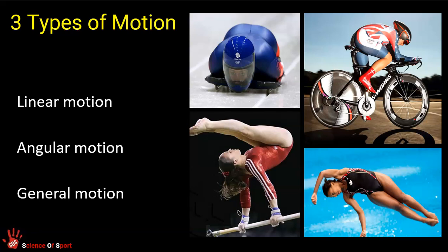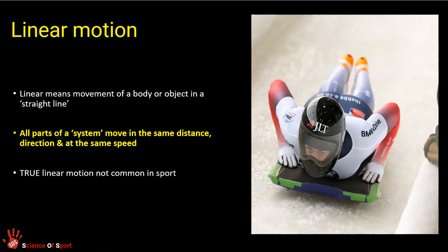Three types of motion: linear motion, angular motion, and general motion. Linear motion is, in simplest terms, straight line motion. It's when all parts of a system or body or object move in the same direction, at the same time, and over the same distance. True linear motion fulfilling that definition aren't that common in sport.